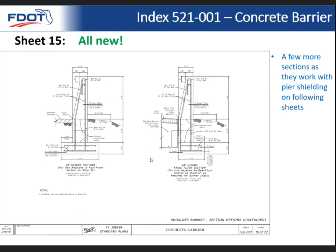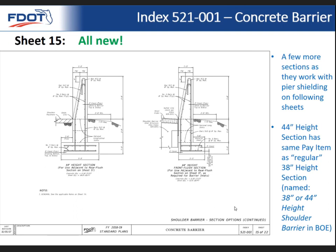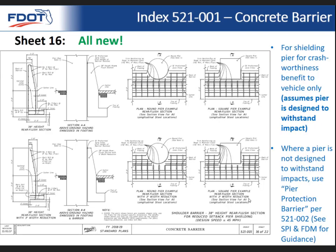A couple more sections accommodate reducing the setback requirement — the zone of intrusion — when shielding piers, handled on the next sheet. The 44-inch height section raises the barrier up a little bit but you can still use the same pay item as the so-called standard 38-inch height. That's clearly explained under the barrier offset envelope (BOE).